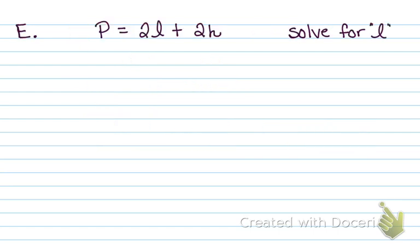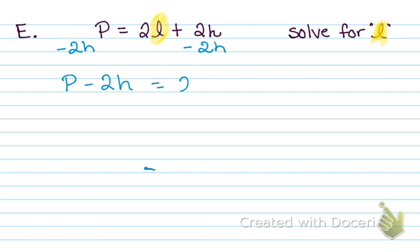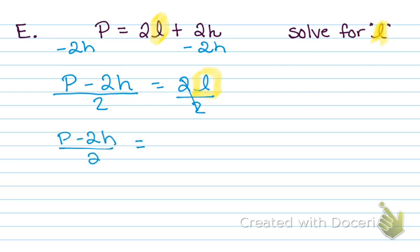Alright, let's go to problem E. This time we're going to solve for L. I make the L's cursive so they stand out and don't look like a 1. Notice I have 2's with it — I'm still going to move things over the same exact way, moving whole pieces. So minus 2H on both sides. I can write this with negative 2H first or P first — I'm going to write P first, it just looks cleaner. And then I have 2L. Now I have 2L, so I need to divide by 2. So divide by 2 on all pieces. I can leave it just like this: P minus 2H divided by 2 equals L.